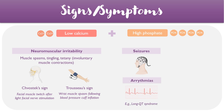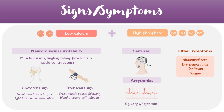Some of the other generic symptoms of hypoparathyroidism include abdominal pain, dry skin, confusion, and fatigue, and these all occur due to the imbalance of electrolytes.